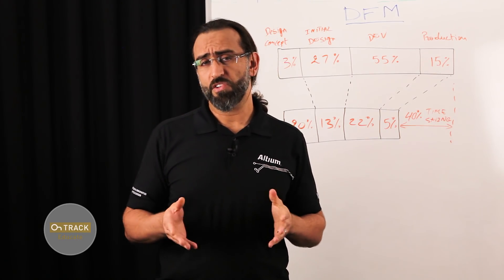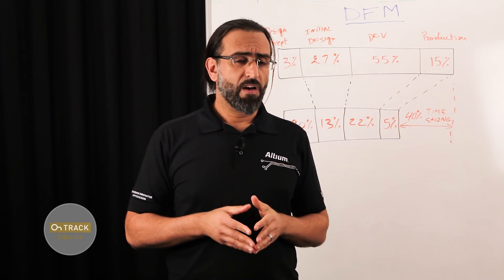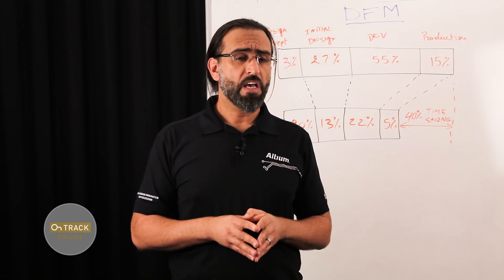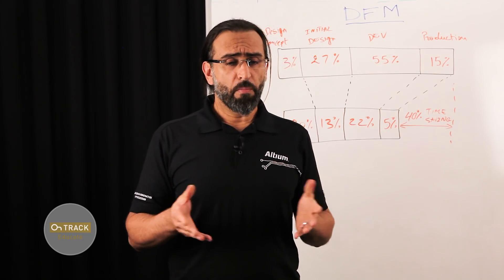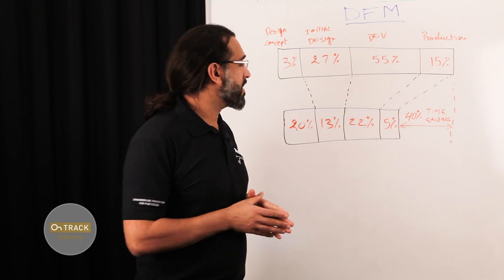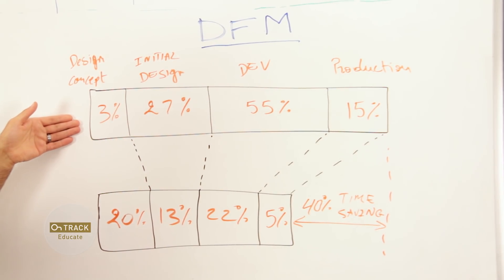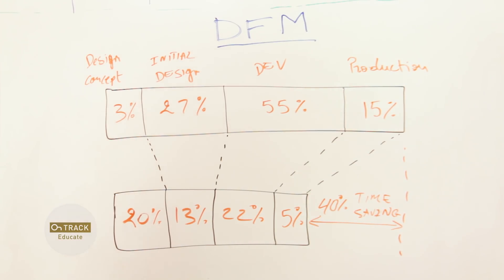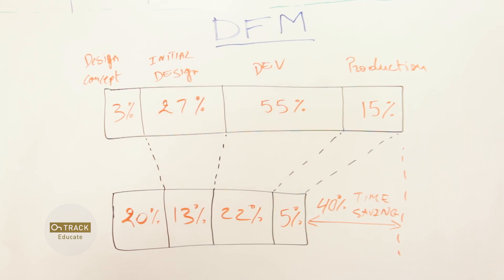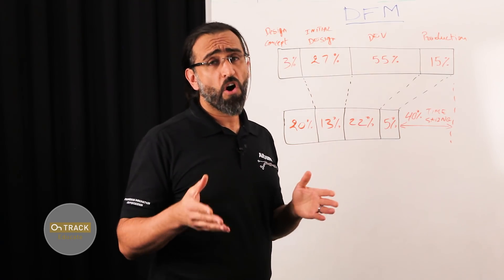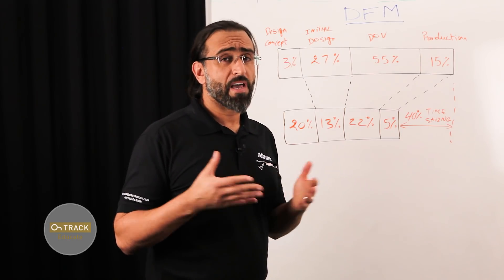Today we're going to be covering two concepts. The first is: which technology should I use — through-hole or surface mount? And the second is silk screen — how you can take advantage of the high tolerance in silk screen to outline your design and reference designators. Before we do that, I want to reference this diagram from a study done by Concept Engineering. It shows that an upfront investment to introduce DFM early in the design strategy will yield 40% in time saving, which also translates into cost saving, along with long-term reliability of your product.